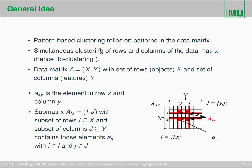What pattern-based clustering algorithms typically try to find are sub-matrices having a given cluster criterion. The sub-matrix A_IJ specifies a subset of rows I (a subset of the objects) and a subset of columns J (a subset of the features). The elements in this sub-matrix follow a specific pattern — that's why they are called pattern-based clustering.